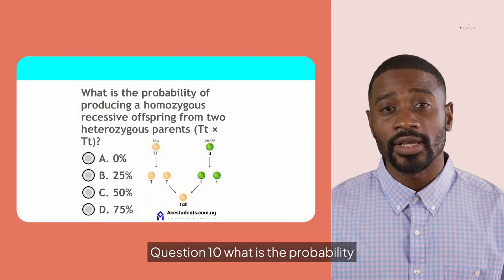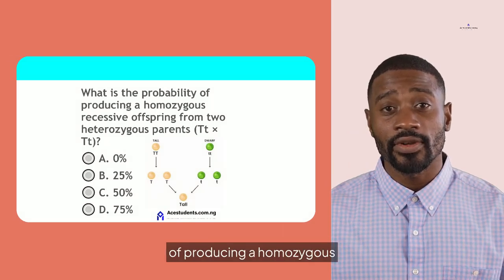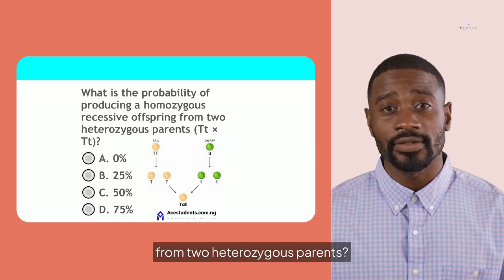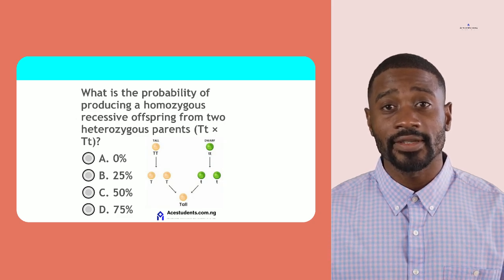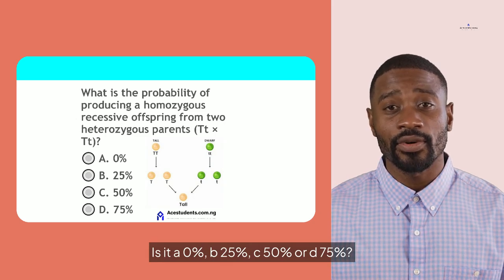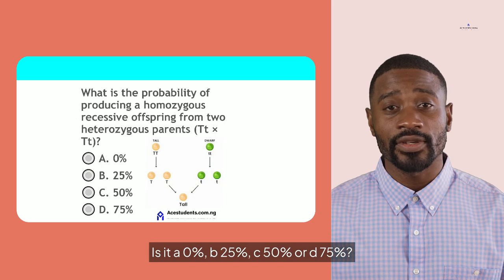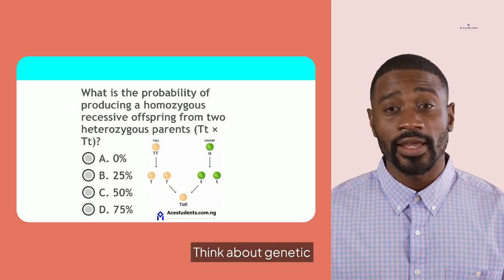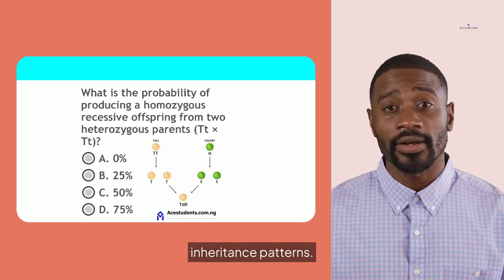Question 10. What is the probability of producing a homozygous recessive offspring from two heterozygous parents? Is it A. 0%, B. 25%, C. 50%, or D. 75%? Think about genetic inheritance patterns.